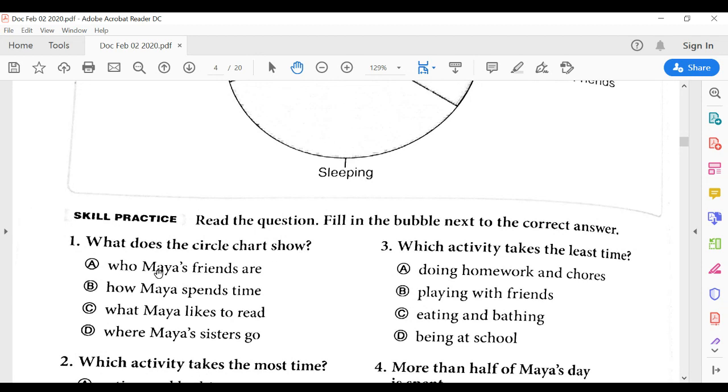What does the circle chart show? A. who Maya's friends are, B. how Maya spends time, C. what Maya likes to read, or D. where Maya's sisters go.